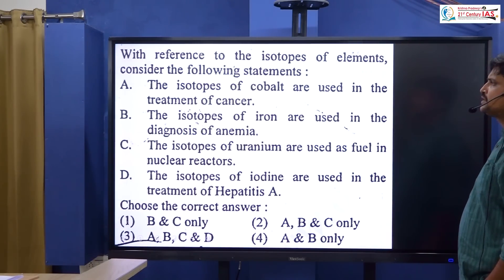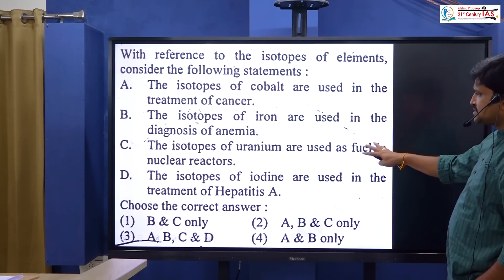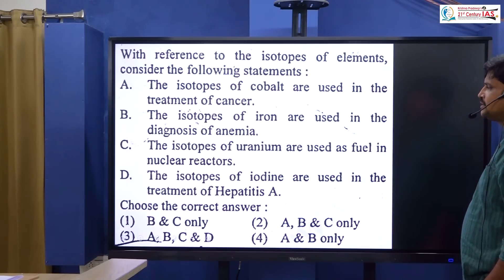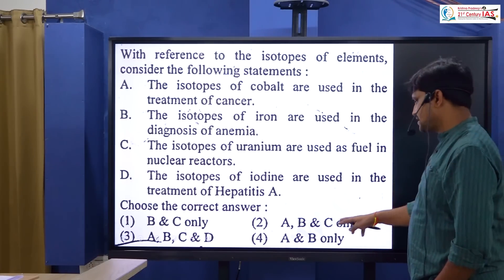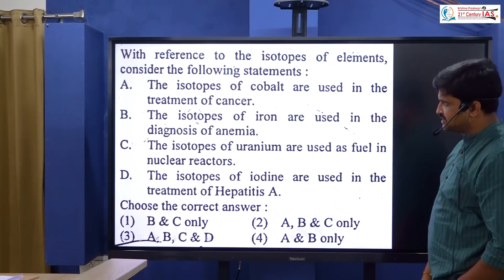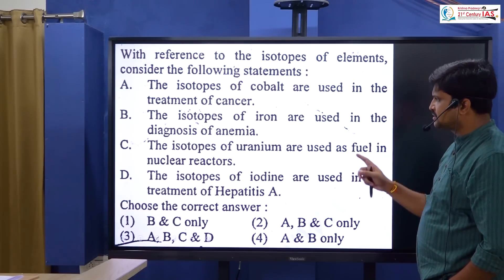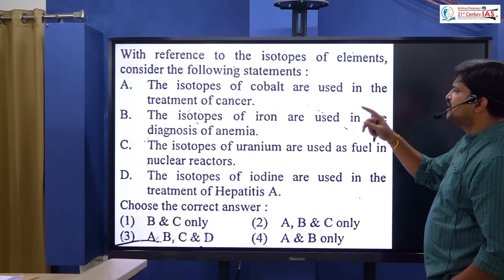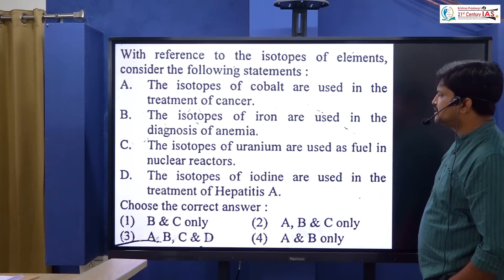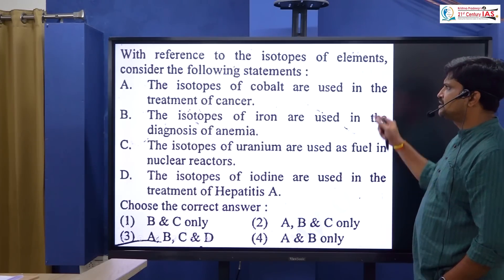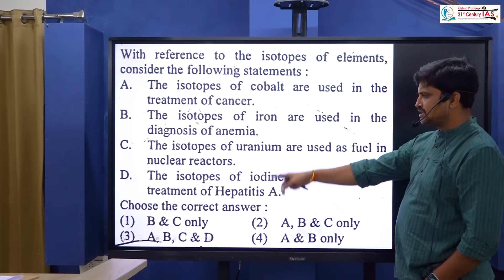With reference to isotopes of elements: isotopes of iodine are used in thyroid treatment (100% correct); isotopes of uranium are used as fuel in nuclear reactors (100% correct); isotopes of iron are used in the diagnosis of anemia (correct); isotopes of cobalt are used in the treatment of cancer. Therefore B and C are correct — option 1 is the correct answer.